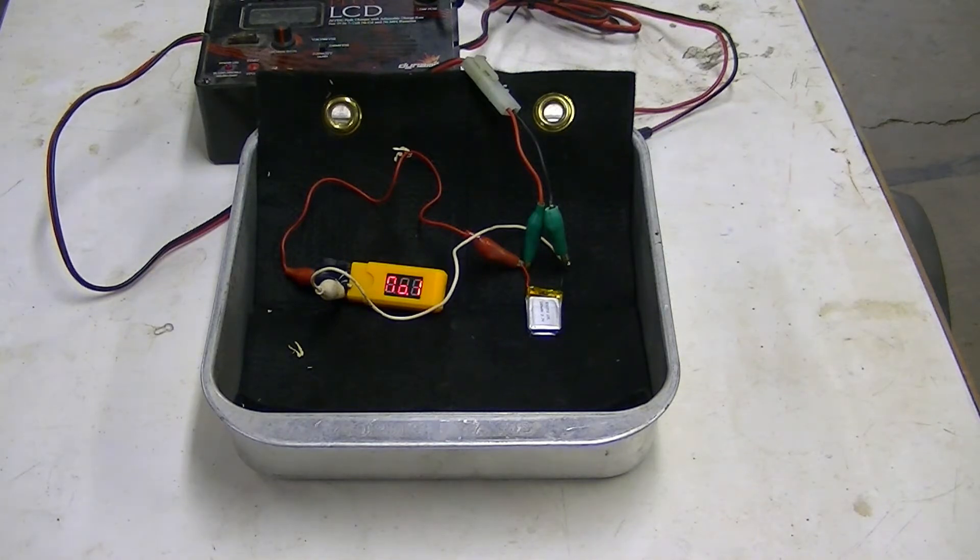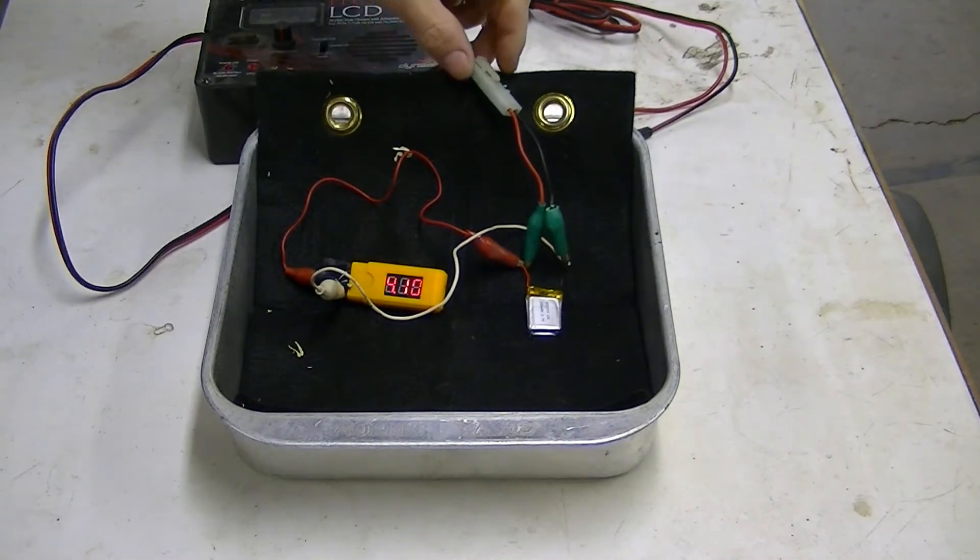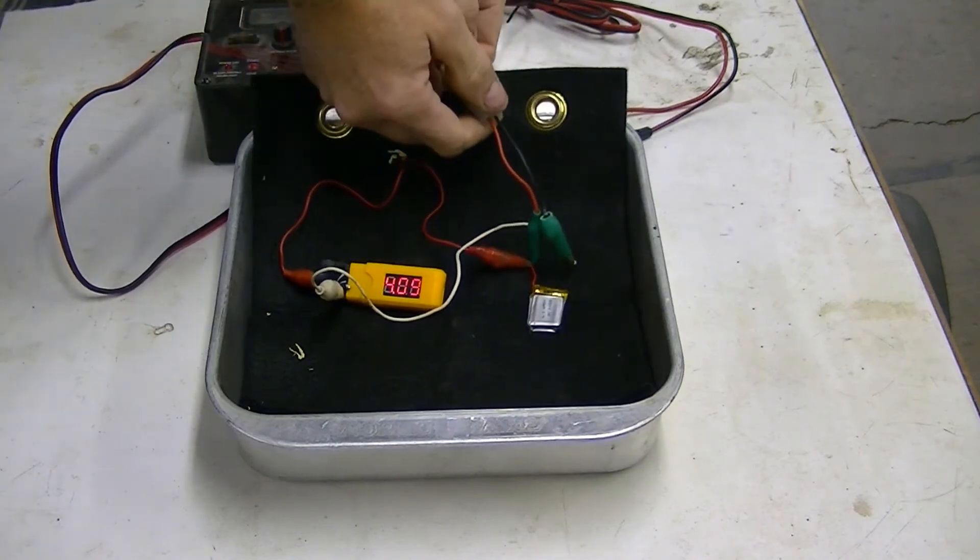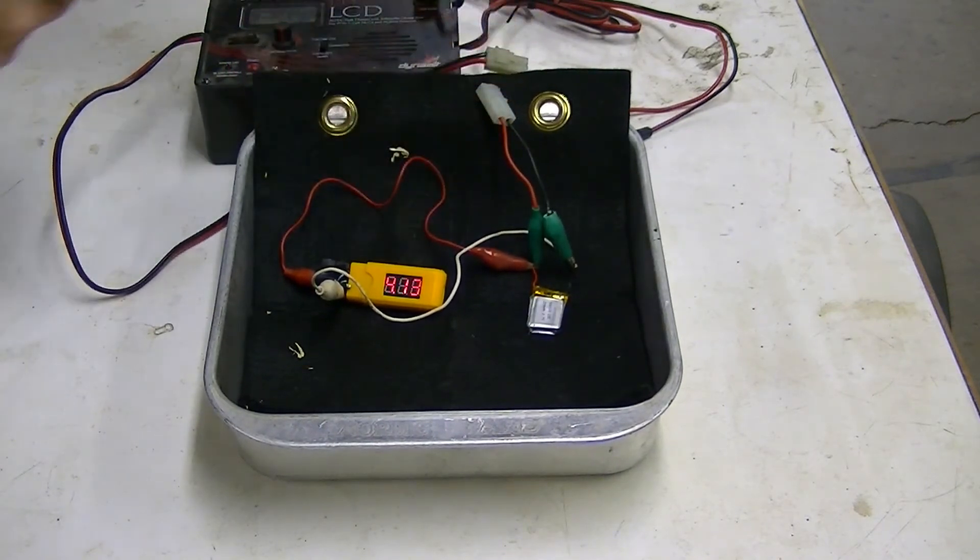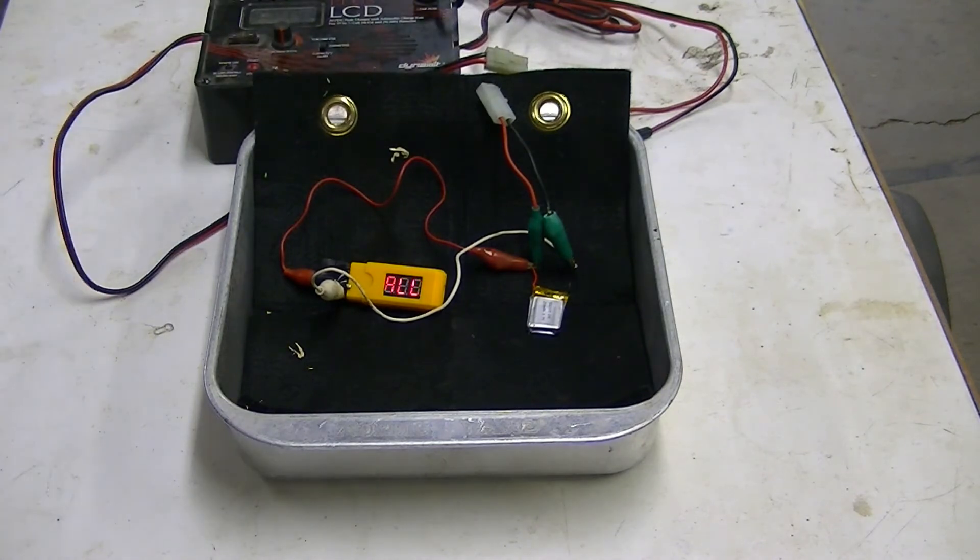Now, if it's doing what it's supposed to, when I unplug this, it should keep voltage. Oh, look at that. I've just jump-started that LiPo battery. It is now showing 4.13 volts.